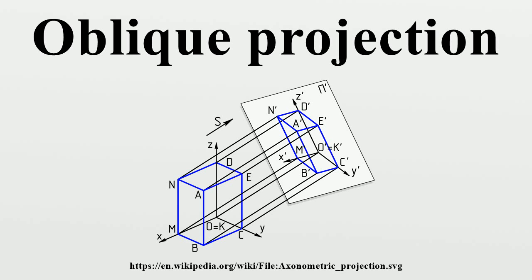Oblique projection is a type of parallel projection. It projects an image by intersecting parallel rays from the three-dimensional source object with the drawing surface. In both oblique projection and orthographic projection, parallel lines of the source object produce parallel lines in the projected image. The projectors in oblique projection intersect the projection plane at an oblique angle to produce the projected image, as opposed to the perpendicular angle used in orthographic projection.